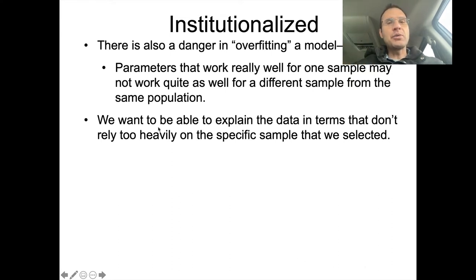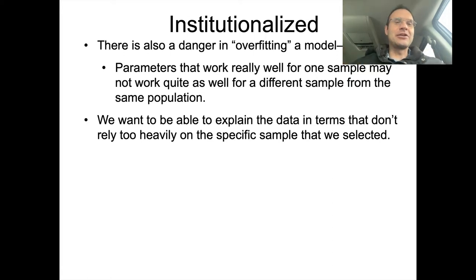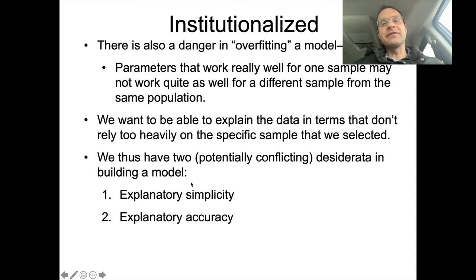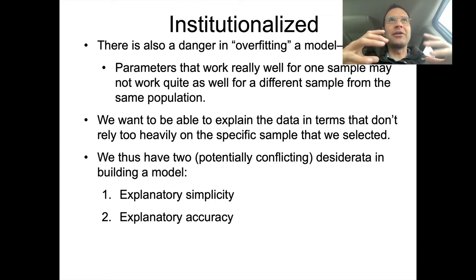We want to be able to explain data in terms that don't rely too heavily on the specific sample that we selected. So we thus have two potentially conflicting desiderata in building a model. On the one hand, we have explanatory simplicity — that's the Occam's razor part — so let's keep our model simple enough that it's testable and understandable.